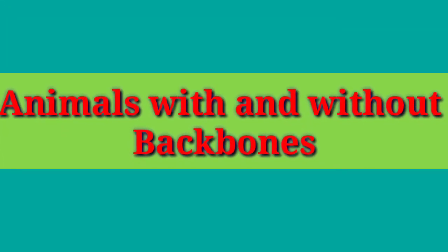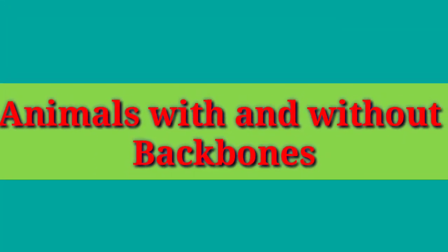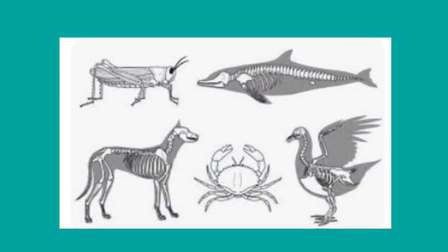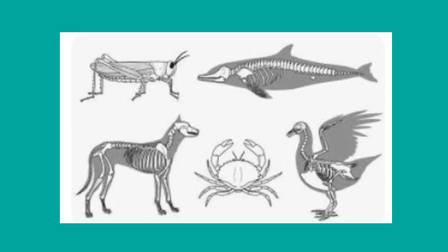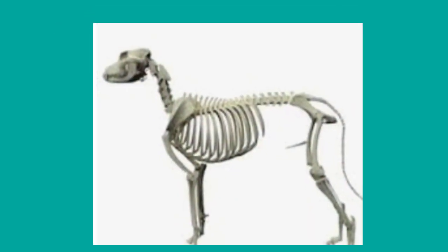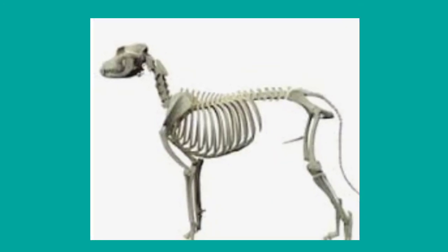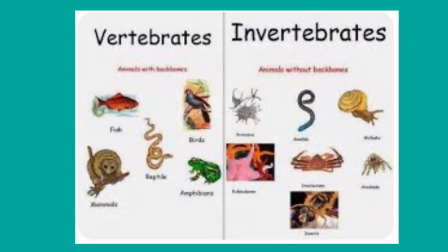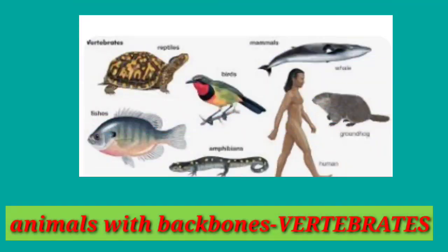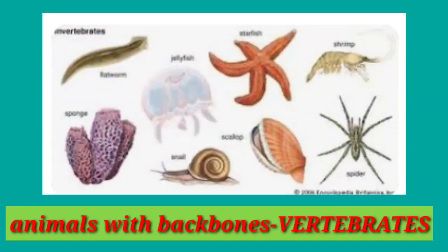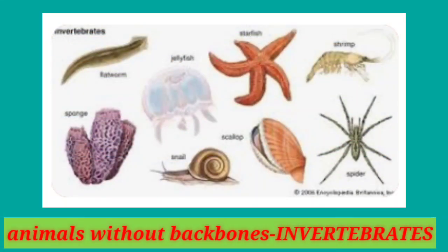Animals with and without backbones. Some animals have a backbone while others do not. The backbone is composed of small bones called the vertebrae. The backbone is a part of the body that may be used to classify animals. Animals with a backbone form one group called vertebrates. Those without backbones form another group called invertebrates.